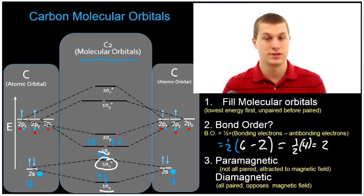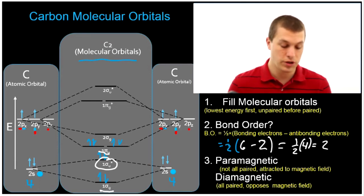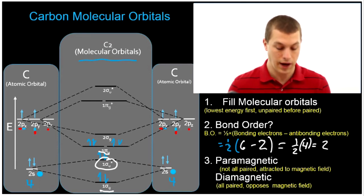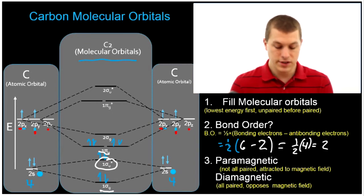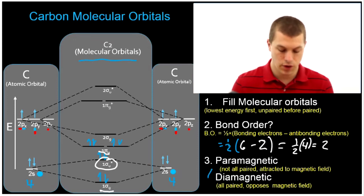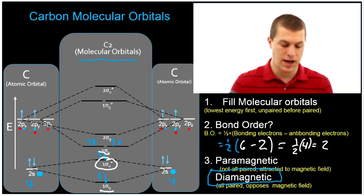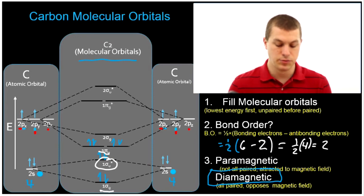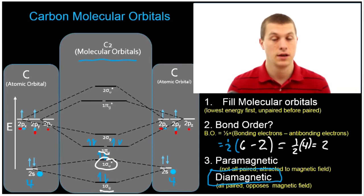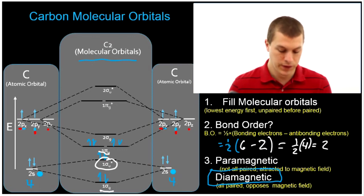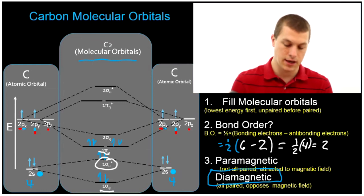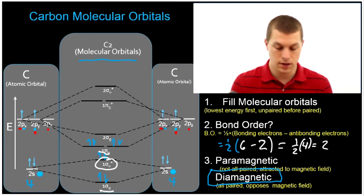Notice that C2 actually turns out not to make a very stable molecule, but you can still write down your molecular orbital diagram for that and decide if the molecule would be paramagnetic or diamagnetic. In this case, once again we see that all of our electrons are paired, and so carbon is also diamagnetic. This is actually more common than paramagnetic — most materials are diamagnetic. So carbon has a bond order of two and it's diamagnetic, meaning it's going to be repelled by a magnetic field.